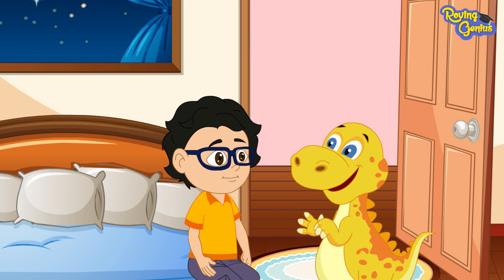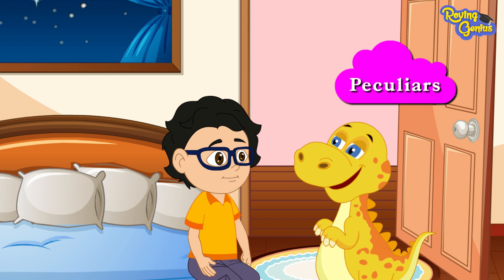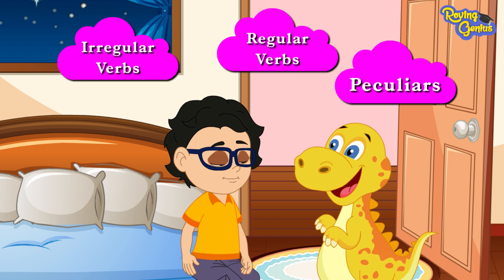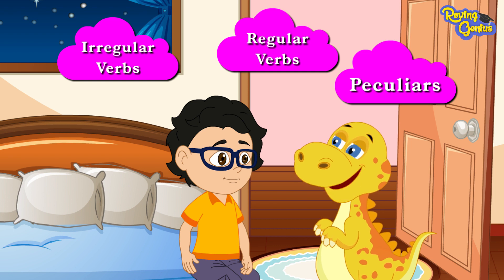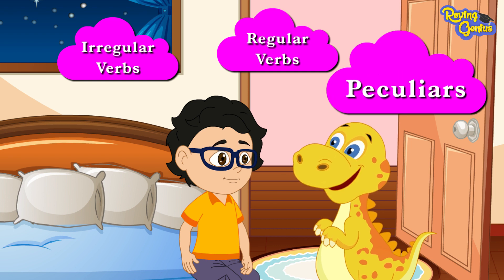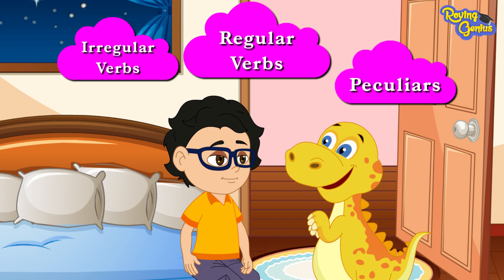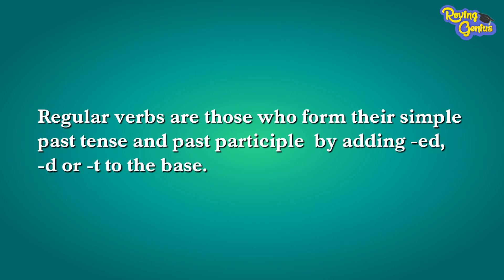As you know, there are three kinds of verbs: peculiar verbs, regular verbs, and irregular verbs. You already know what peculiar verbs are. Now let us learn what regular and irregular verbs are.